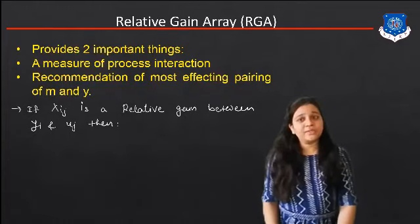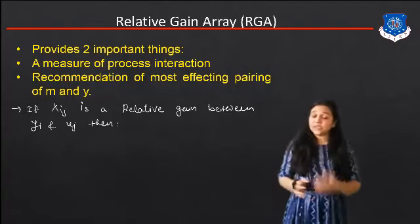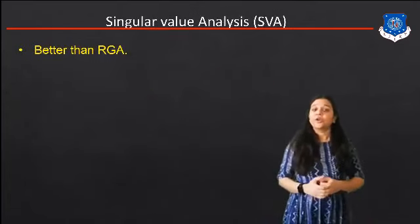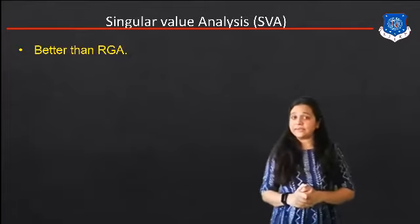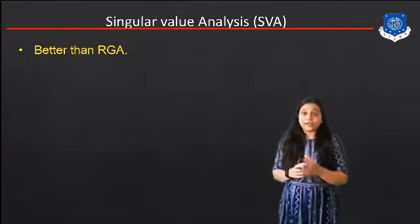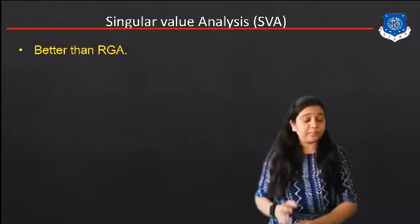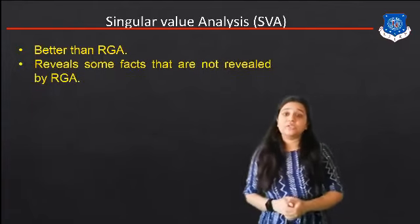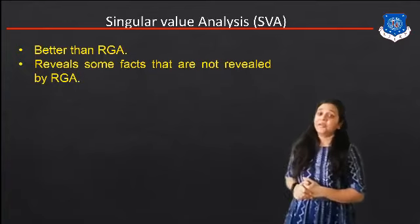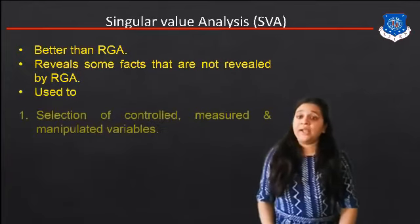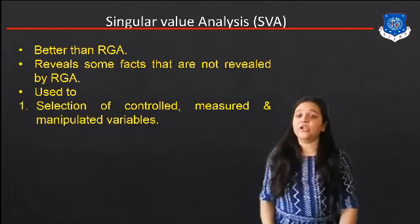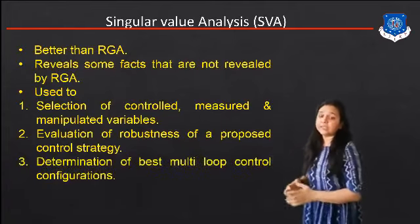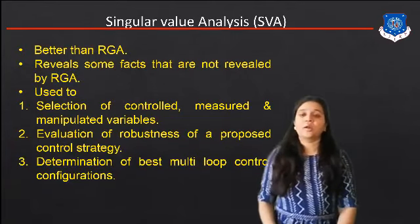But if there is a problem using the Relative Gain Array, we can use the extension of RGA to find the most effective pairing. Today's topic is Singular Value Analysis, which we studied in the last session. It is better than RGA. It reveals some facts not revealed by RGA, and is used for selection of control, measurement and manipulated variables, evaluation of the robustness of the proposed control strategy, and determination of the best multi-loop control configuration.